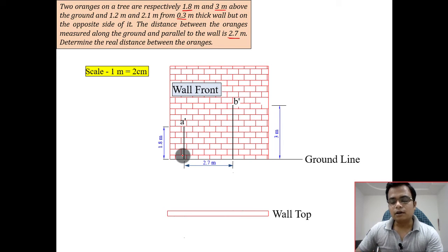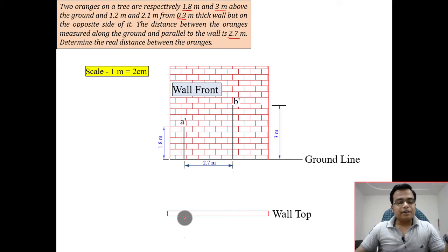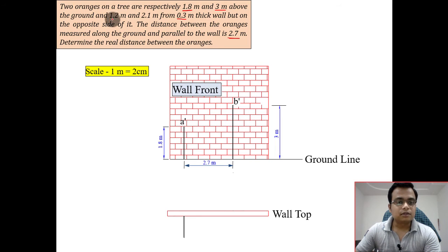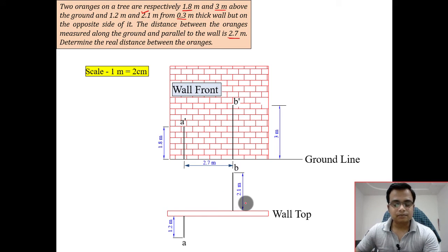Now let's make the front view and top view of the oranges. Orange A is in front of the wall and orange B is behind the wall. In the top view, orange A is in front by 1.2 meters, and along the same line orange B is 2.1 meters behind the wall.